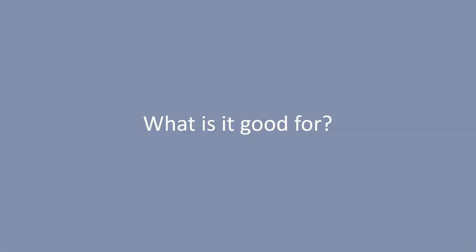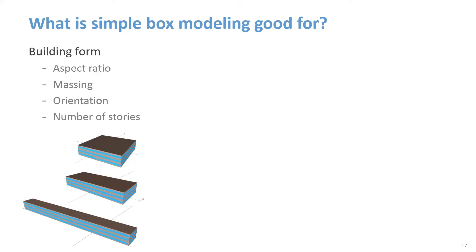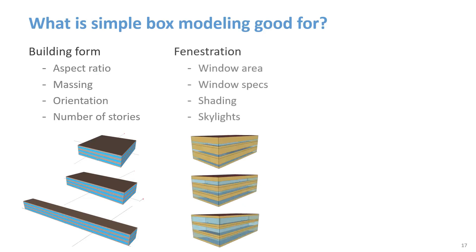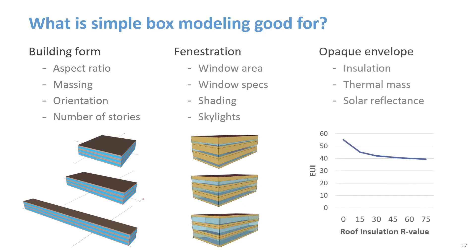Simple box modeling — what is it good for? The most common subjects for simple box model analysis are aspects of the architectural design, such as the building form, fenestration design, and opaque envelope component specifications. These are important because they affect thermal loads, which affects HVAC sizing and energy consumption. Many of these decisions are made early, so you need a quick, simple method to do the analysis.